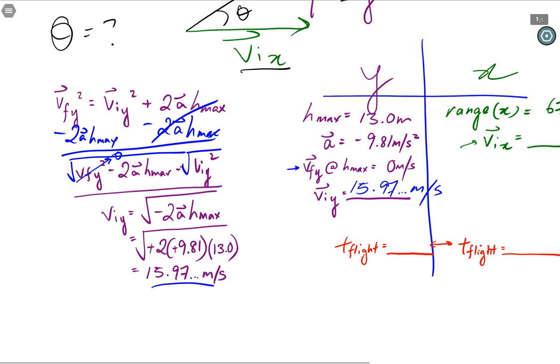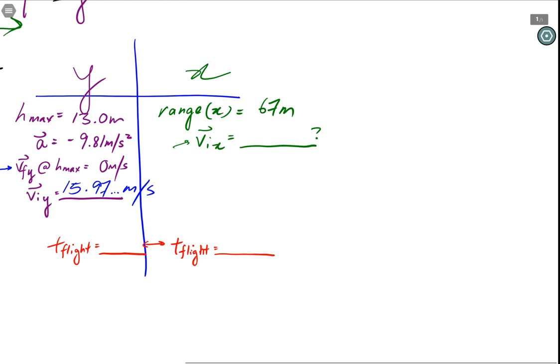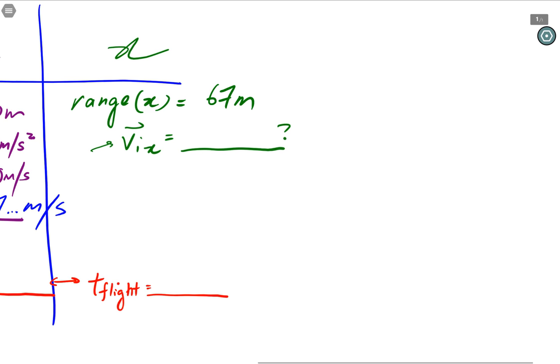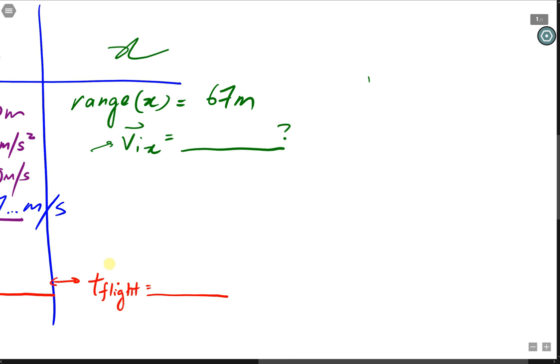Then we should be good. So let's move over, and we have the right side, horizontal components. Our object is traveling horizontally at a constant velocity. So here, that's where we can use vix equals to our distance over time, or in this case, our range over time of flight.